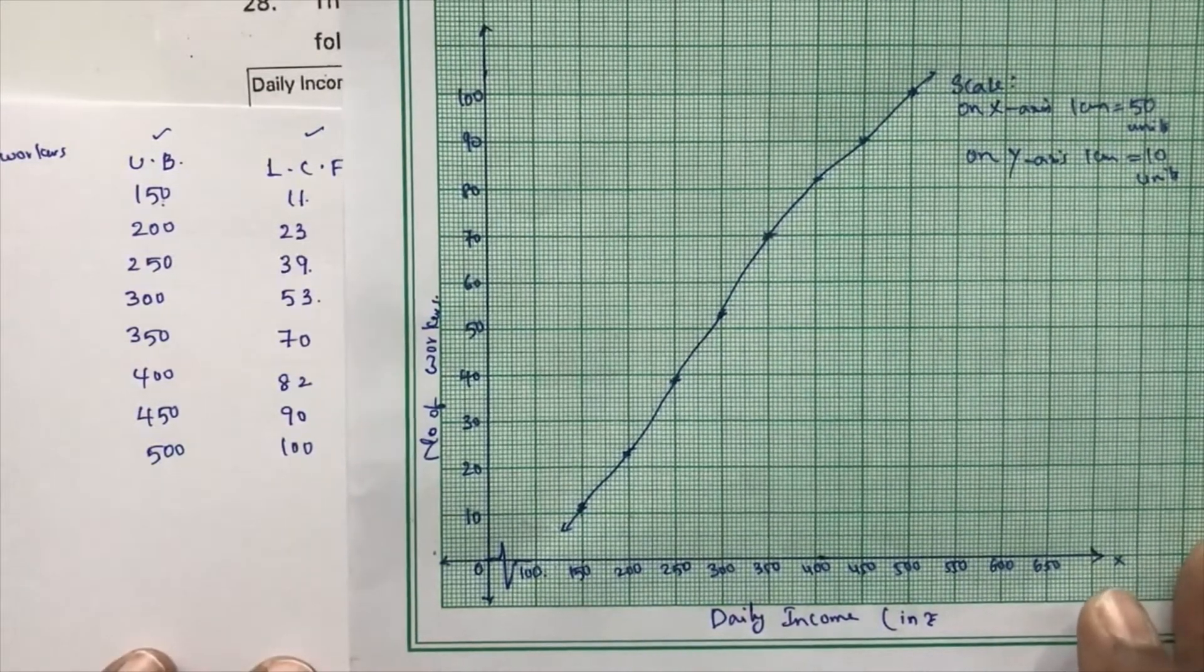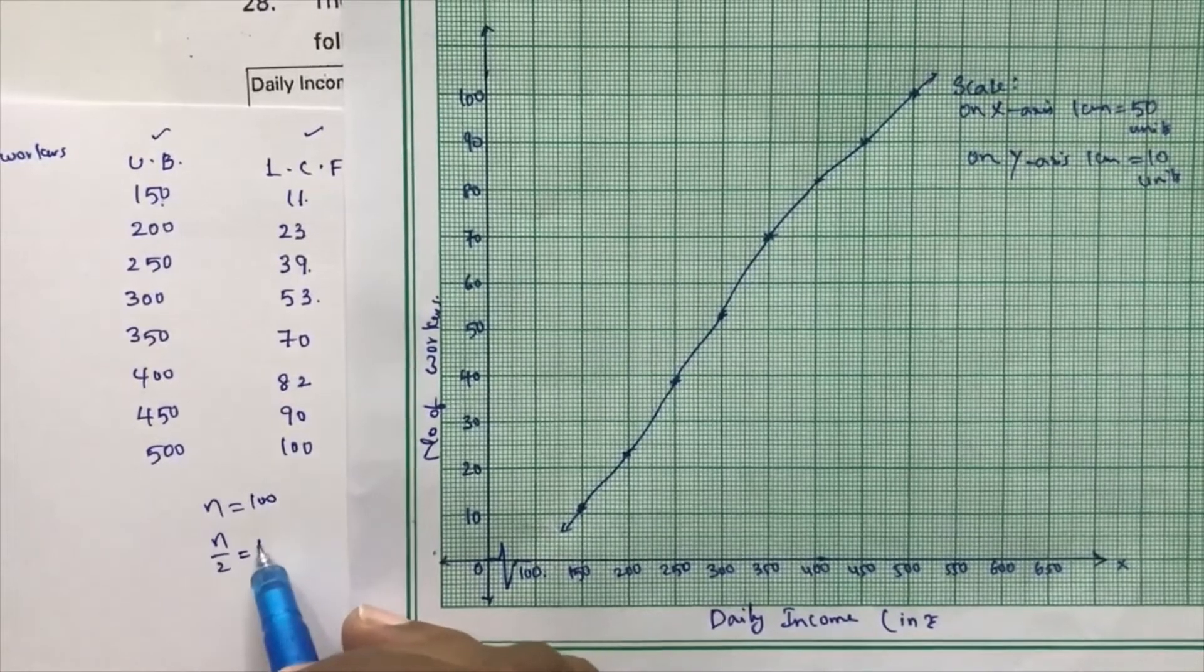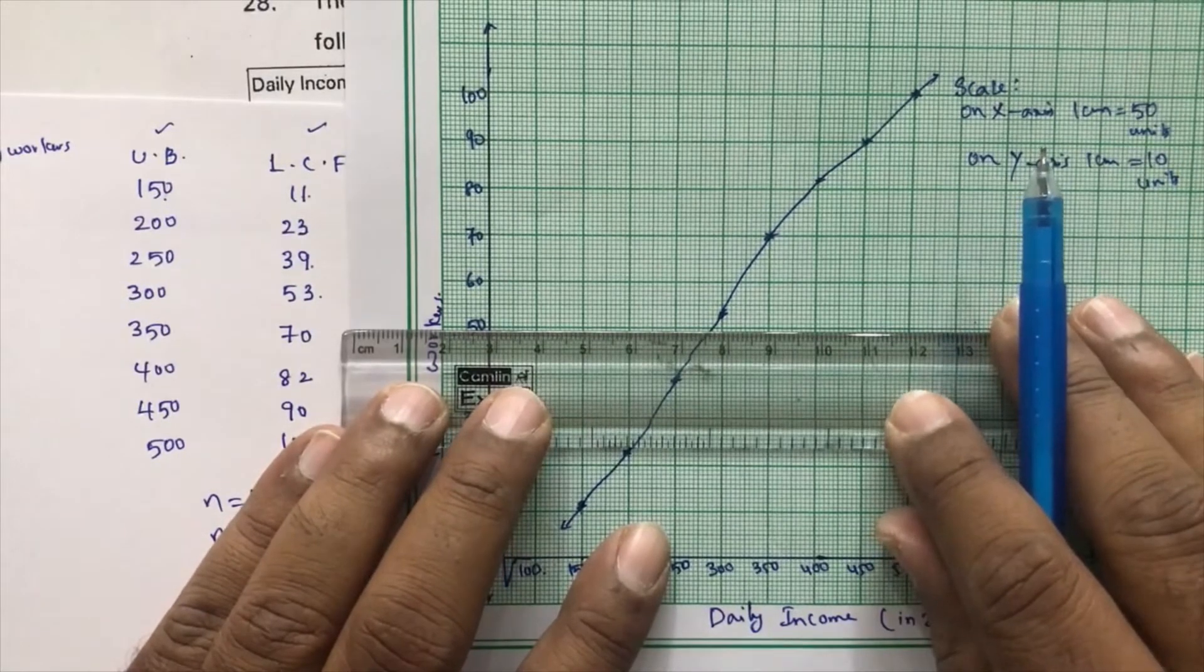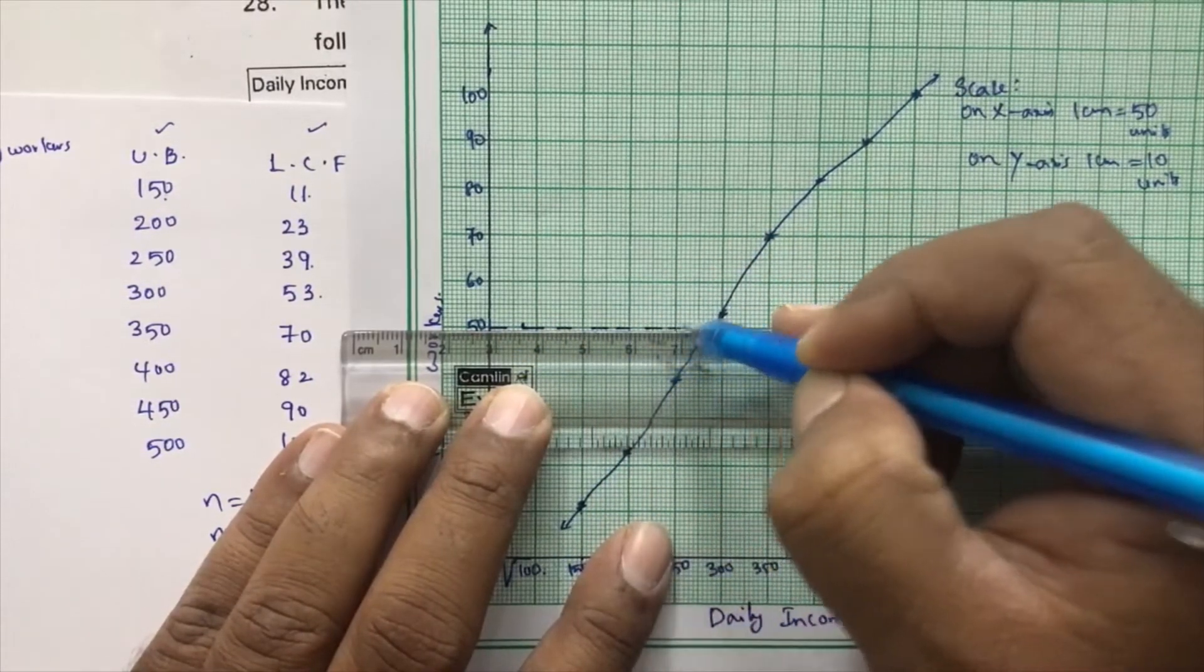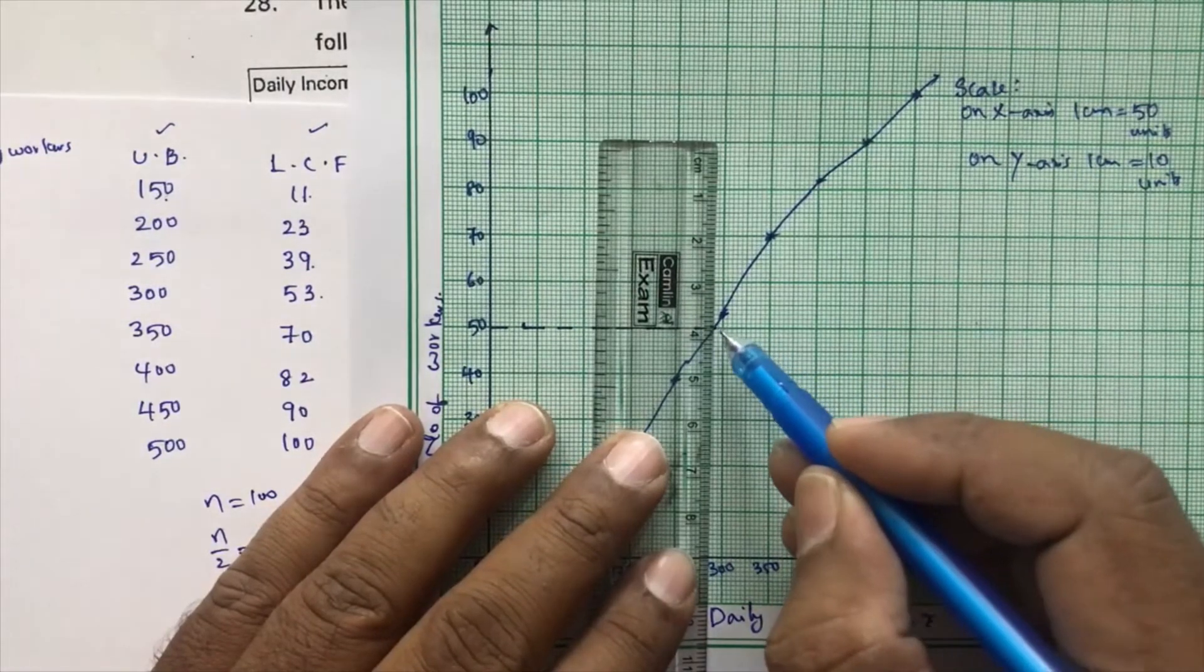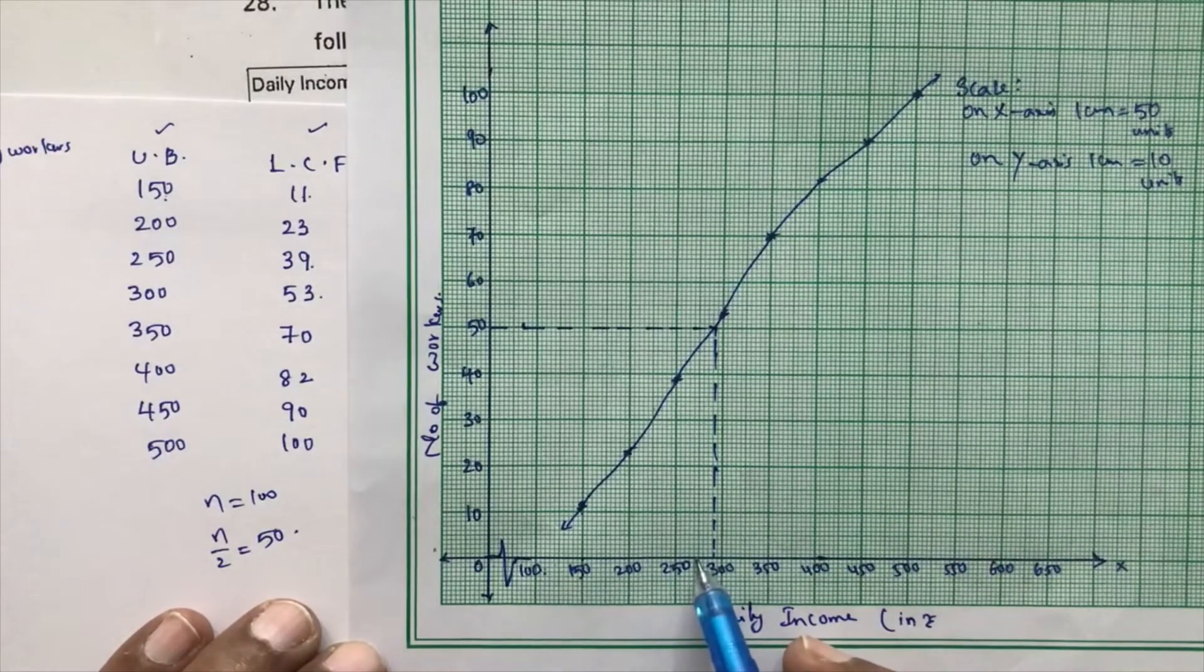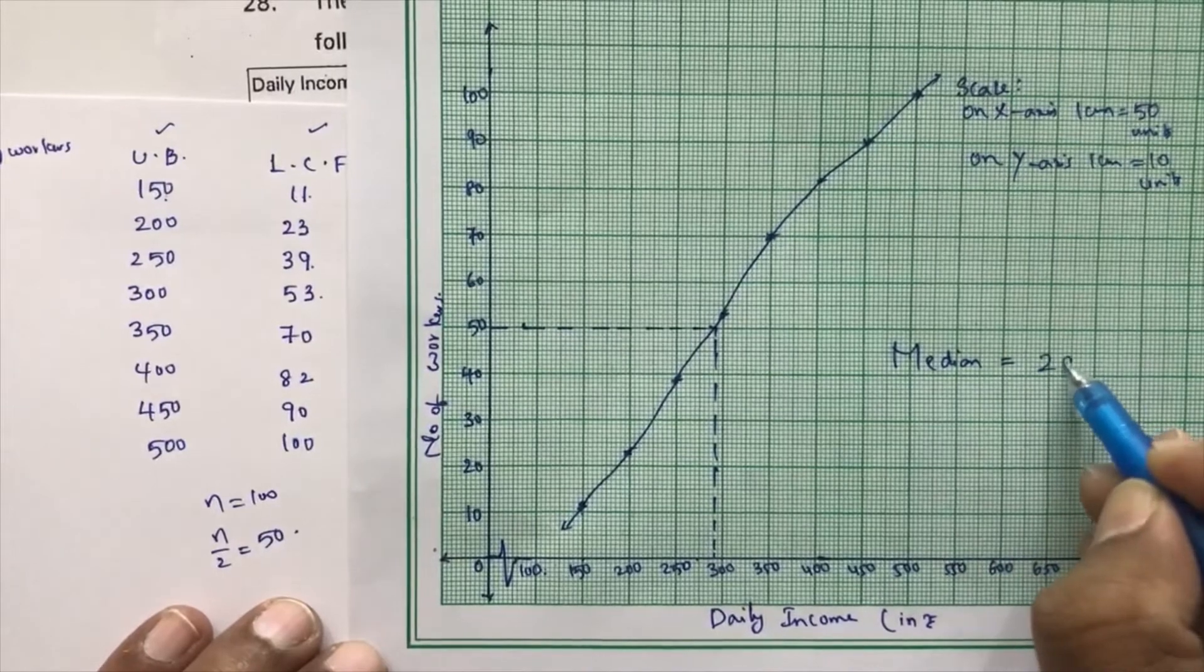Now, we need to find the median with the help of graph. Now see, total frequency is like 100. So just find n by 2, which is nothing but 50. So at 50, draw a line parallel to x-axis. Draw a line parallel to x-axis at 50. So if you'll draw a line parallel to x-axis. Now, wherever it cuts the graph, from there, draw a line parallel to y-axis. So if you draw a line like this something. So here, the median will be, like, see, it is 250. So 275, 280 and something, around 290. So median is 290 approximately.